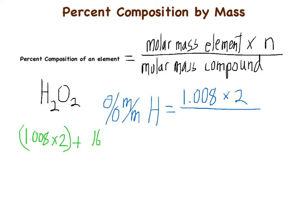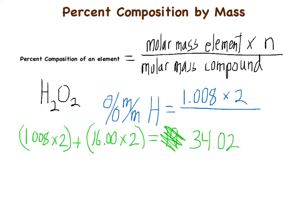The molar mass of H₂O₂ equals the atomic mass of hydrogen times 2, plus the atomic mass of oxygen times 2. That comes out to 34.02 g/mol. So the molar mass of this compound is 34.02, and we insert that into the denominator of the equation.